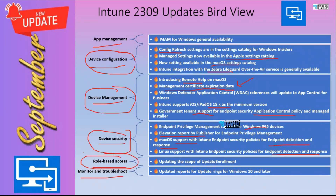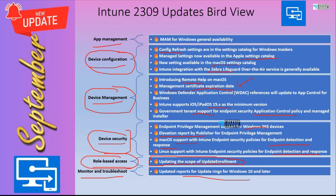In RBAC-related scenarios, there is an additional scope option available for update enrollment. From a monitoring and troubleshooting perspective, there is an updated report for update rings — patching reports in Intune are continually improving, and this is another improvement in that space.